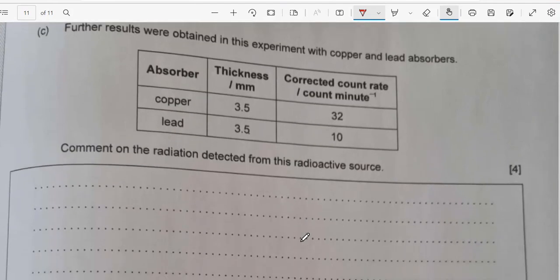Now, further results were obtained in this experiment with copper and lead absorber. So here I have copper and this is lead. We use the same thickness, 3.5 millimeter. Now the corrected count rate, the amount of radiation per minute for copper is 32 and for lead 10. That means the copper allows some of the radiation to pass through it.